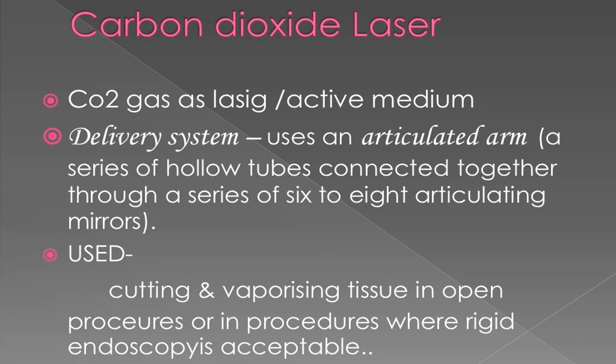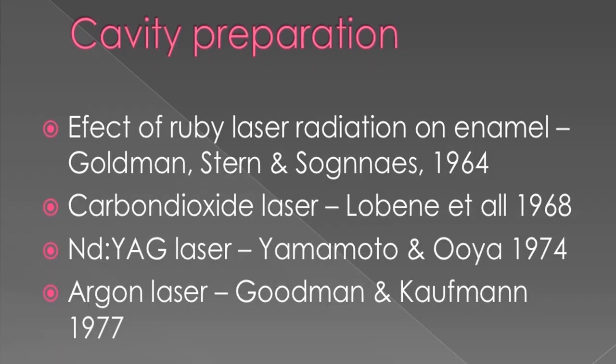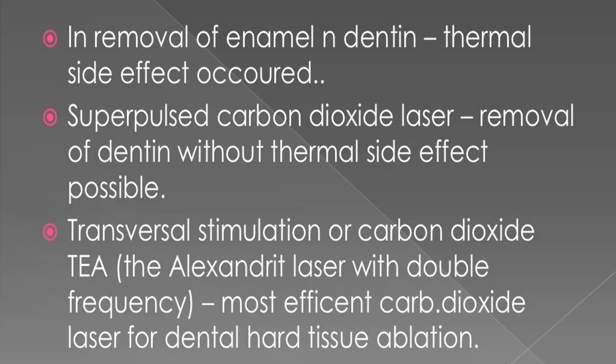Delivery uses an articulated arm — a series of hollow tubes connected through 6–8 articulating mirrors — used for cutting and vaporizing tissue in open procedures or where rigid endoscopes are acceptable. Historical milestones: effect of ruby laser radiation on enamel — Goldman, Stern, and Sognnaes 1964; carbon dioxide laser — Lobene et al. 1968; Nd:YAG laser — Yamamoto and Nyu 1974; argon laser — Goodman and Kaufman 1977 — all in removal of enamel and dentin.